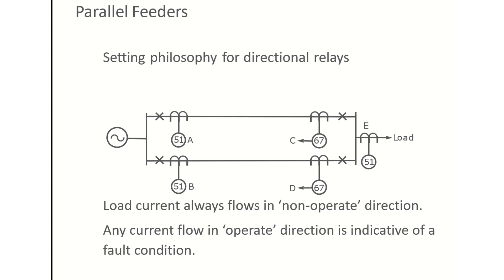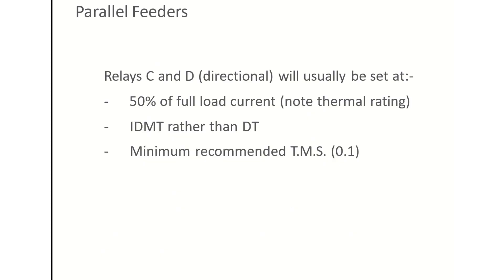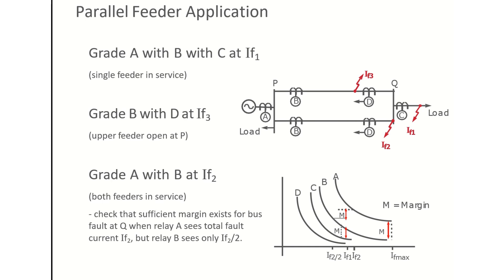The direction is set such that the current flowing in the normal load direction is the non-operate direction. Any current which flows in the operate direction is an indication of a fault and the relay should trip. The fault direction means the current direction opposite to the load current direction. Generally, the minimum recommended TMS is 0.1. IDMT should be used instead of definite time, and the pickup currents should not exceed the thermal rating of the equipment.